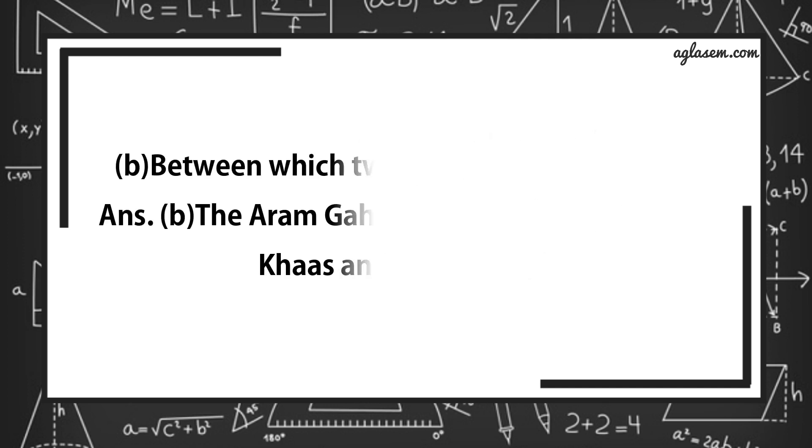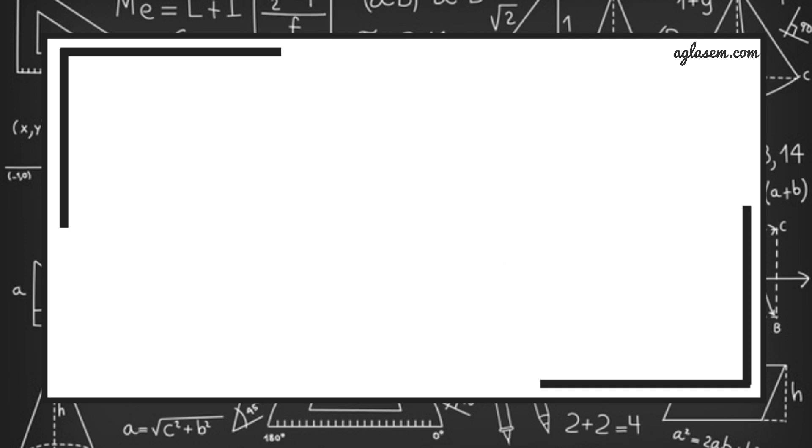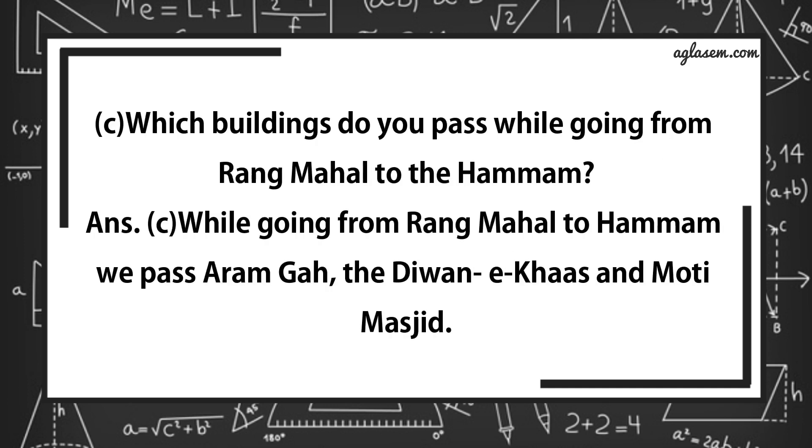Further, B part says, between which two buildings is Aram Gah? Answer is, the Aram Gah lies between the Diwan-E-Khas and Rang Mahal. Further, C part says, which building do you pass while going from Rang Mahal to Hammam? Answer is, while going from Rang Mahal to Hammam, we pass Aram Gah, the Diwan-E-Khas, and Moti Masjid.